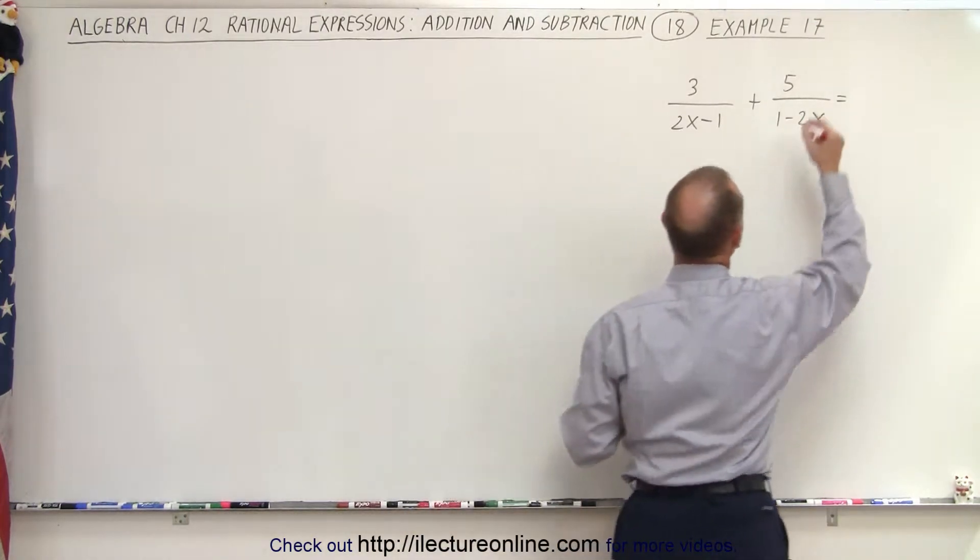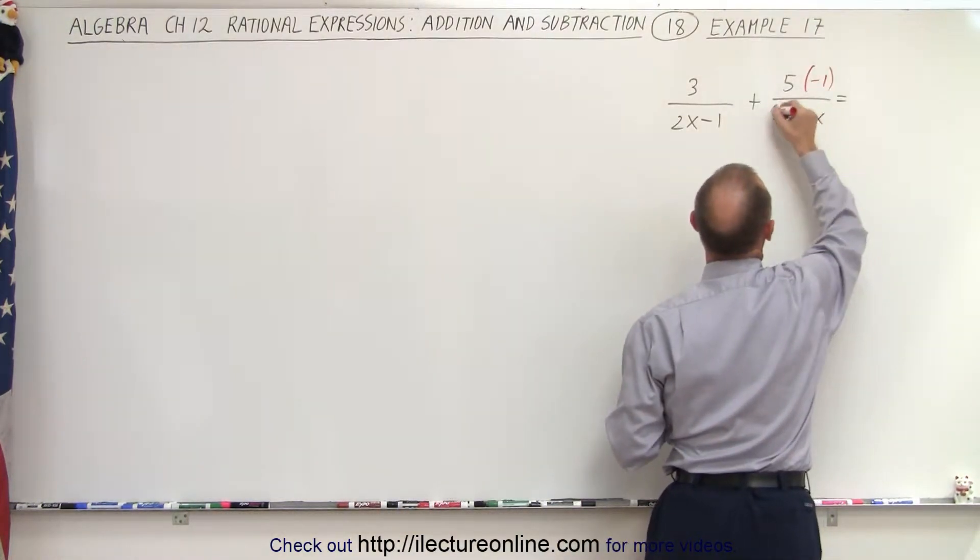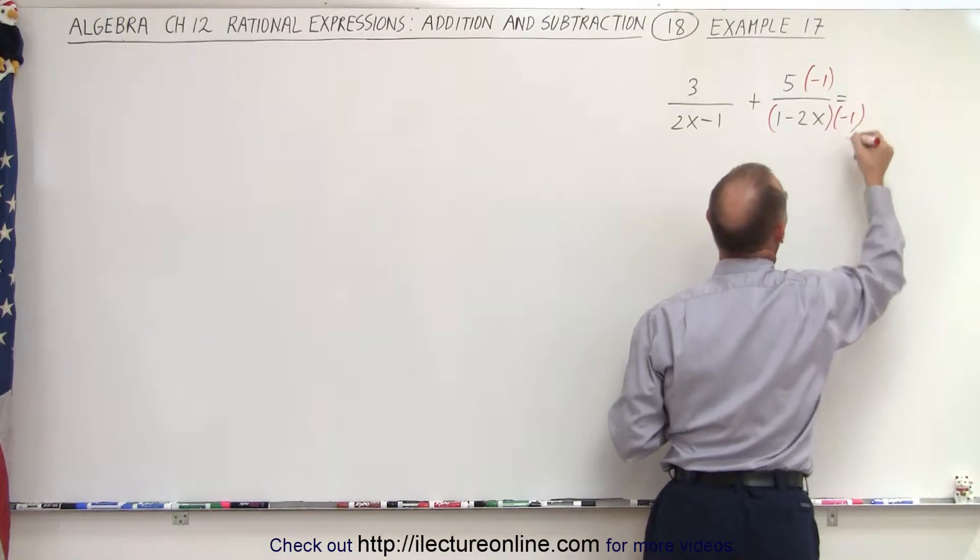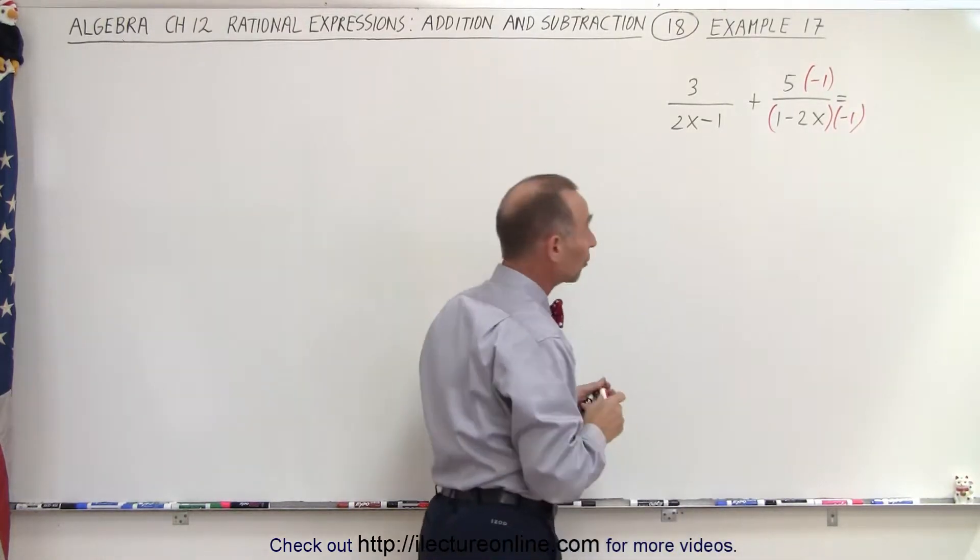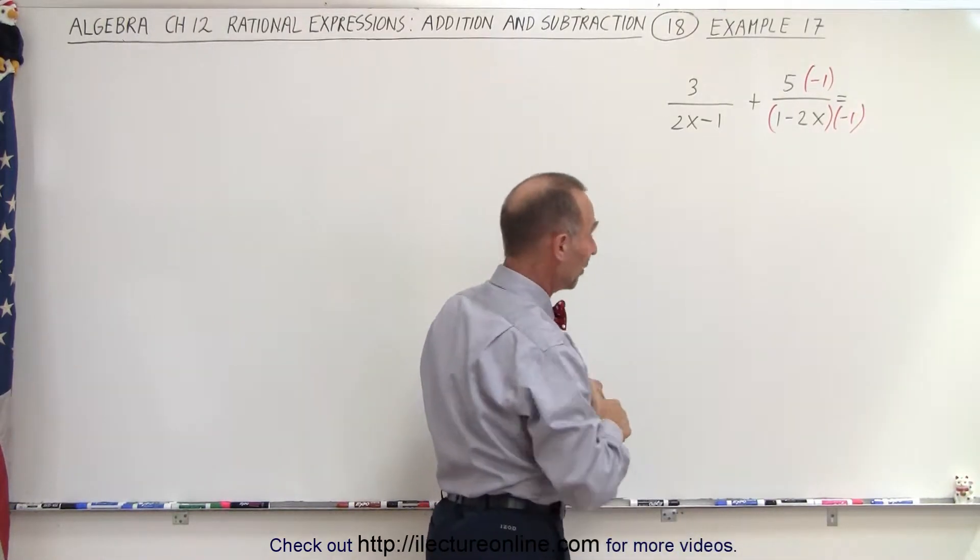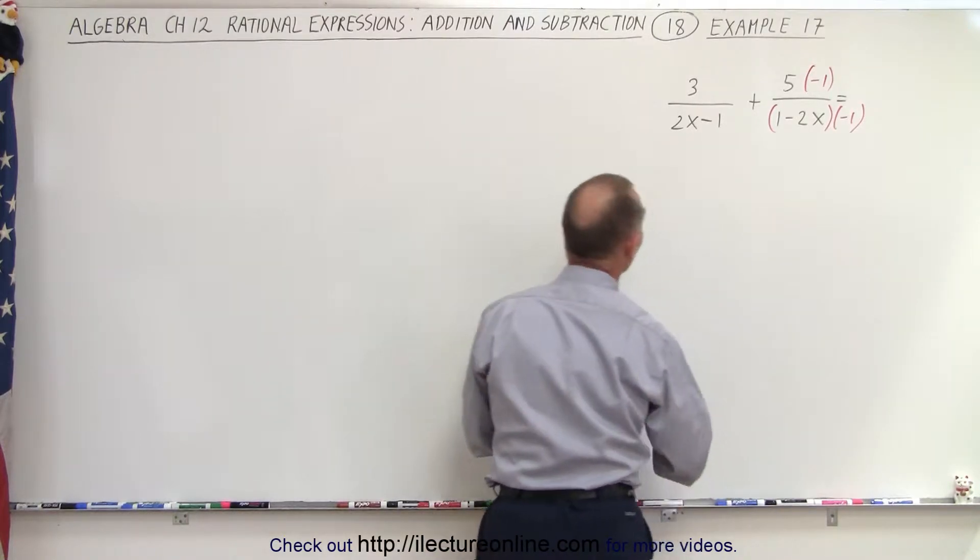So let's see here. We're going to multiply the numerator by a negative 1 and we're going to multiply the denominator by a negative 1. That causes that denominator to flip over and we'll see in just a moment why.